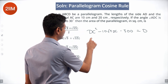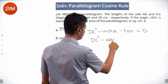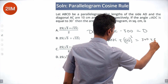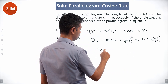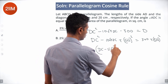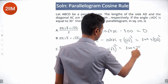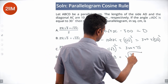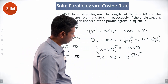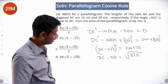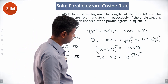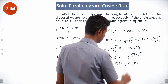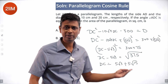So I write this as DC squared minus 10 root 3 DC plus (5 root 3) squared equals 300 plus (5 root 3) squared, giving (DC minus 5 root 3) squared equals 300 plus 75 = 375. Therefore DC minus 5 root 3 equals square root of 375. Taking 25 outside the square root — since 375 = 25 times 15 — we get DC equals 5 root 3 plus 5 root 15.